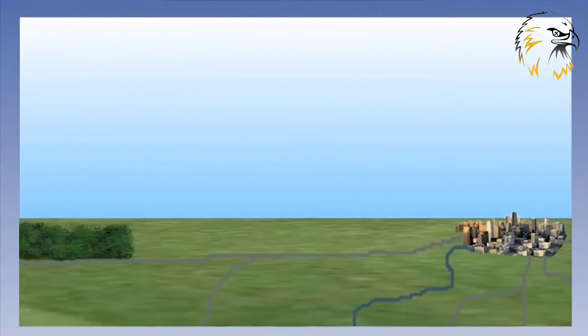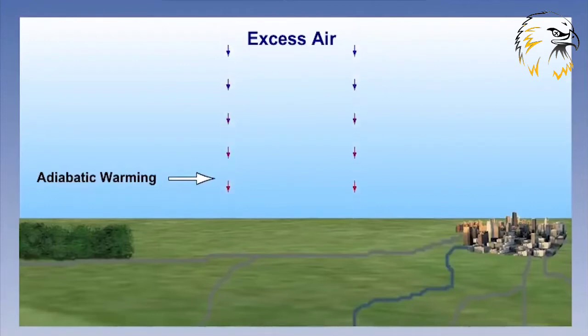In the upper atmosphere, we can have an excess of air. Therefore, air will be forced to descend towards the ground. As this happens, the air is compressed under the increasing amount of pressure, and this causes the temperature to rise. We call this adiabatic warming.